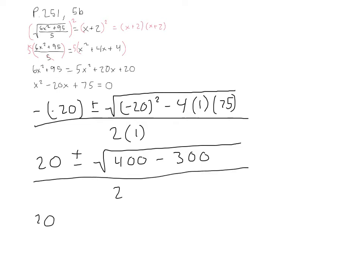This becomes 20 plus or minus 400 minus 300 is 100, the square root of 100 is 10, all over 2. And this equals 20 plus 10 over 2 is 10, and 10 over 2 is 5. Now, 10 plus 5 is 15, 10 minus 5 is 5. So according to this, our solutions are x equals 15, or x equals 5.